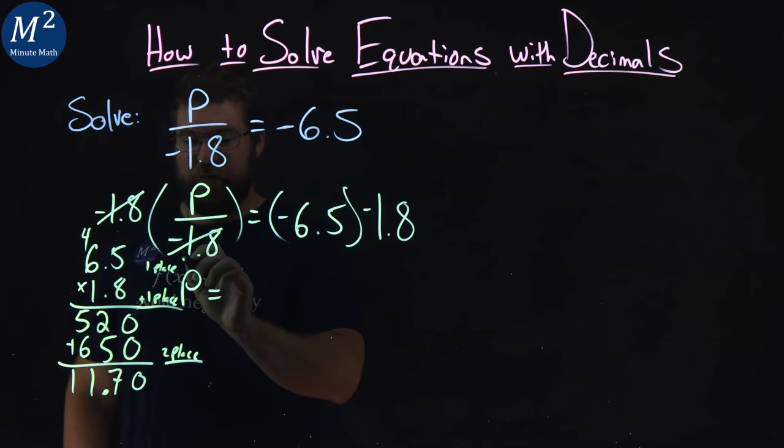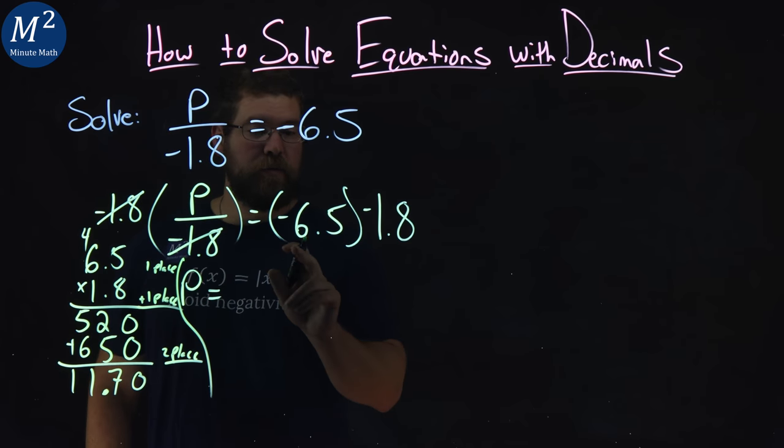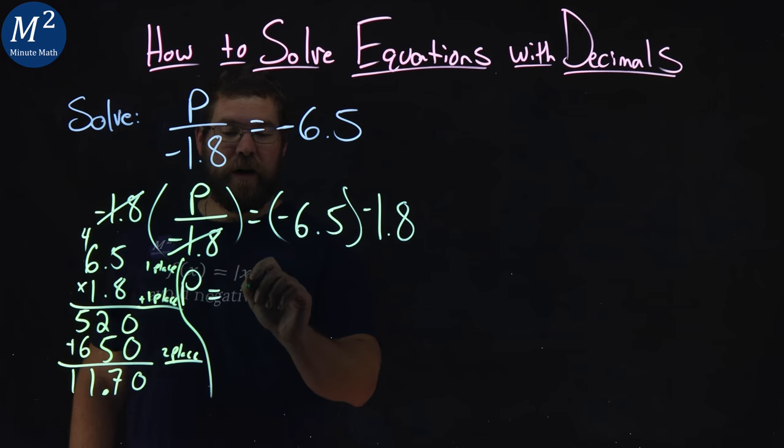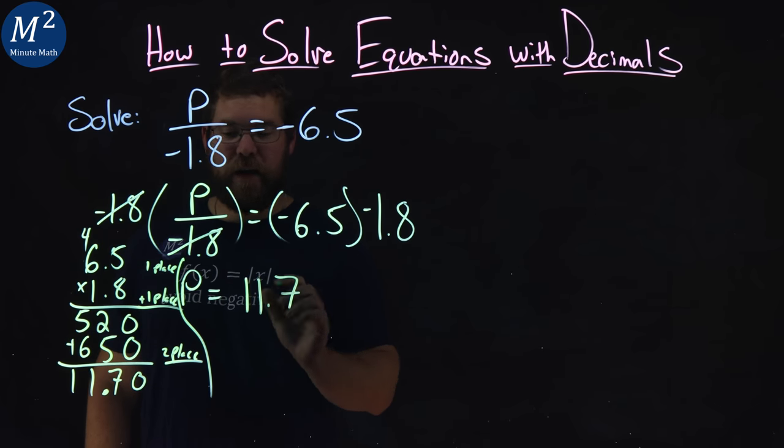So p by itself, I can make a little line here. p is equal to, well, negative 6.5 times negative 1.8 is positive 11.7.